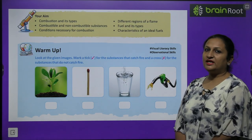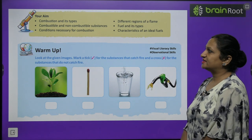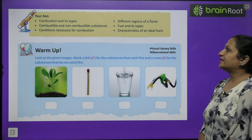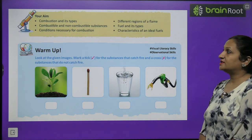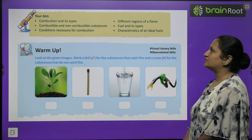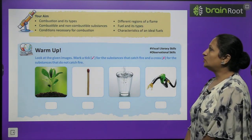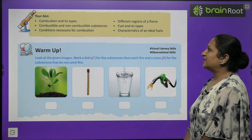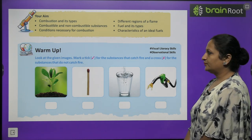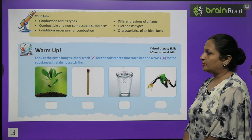The main topics of this chapter will be: combustion and its types, combustible and non-combustible substances, conditions necessary for combustion, different regions of flame, fuel and its types, and characteristics of ideal fuel.